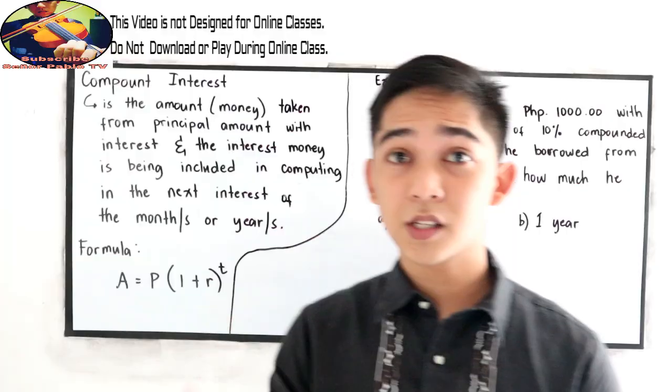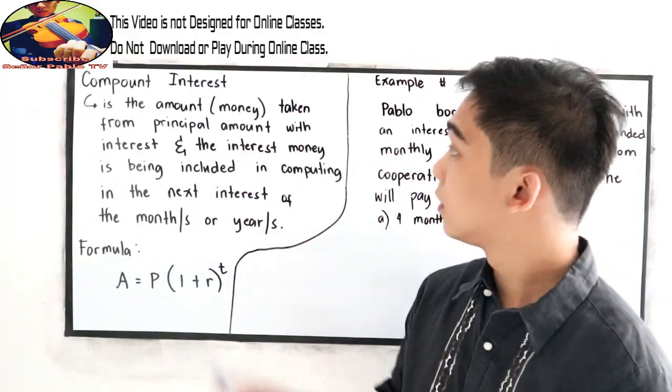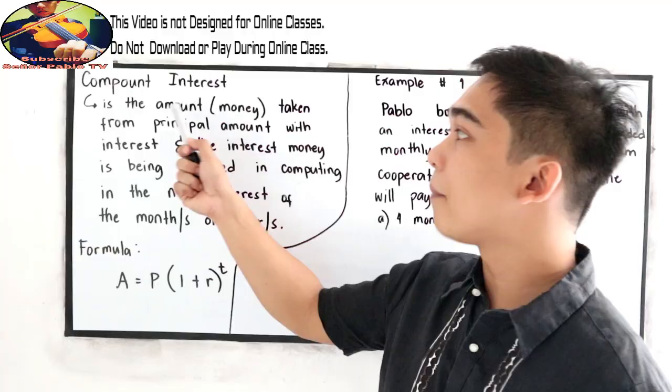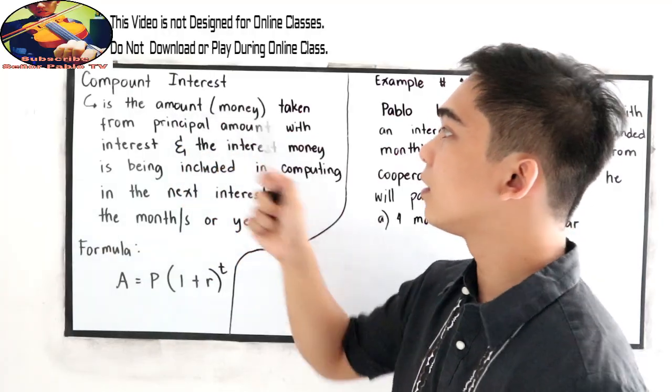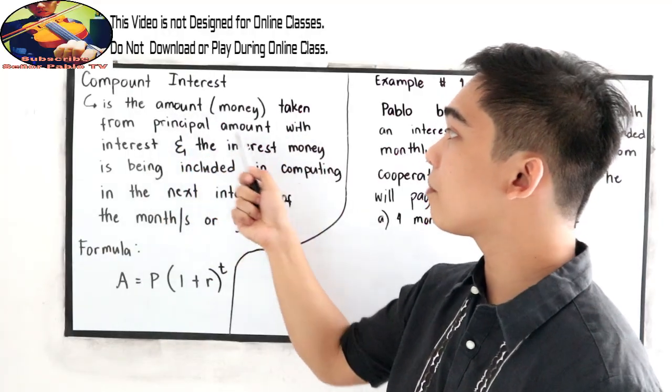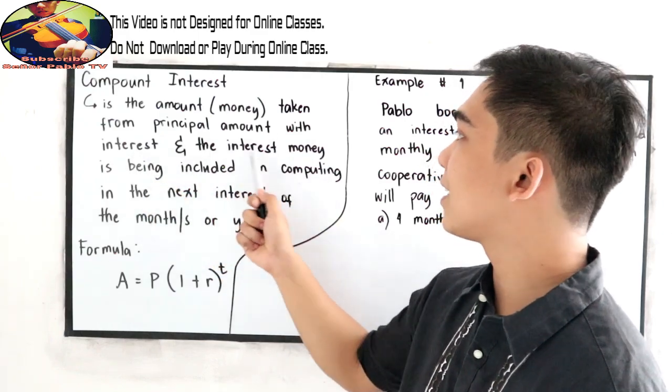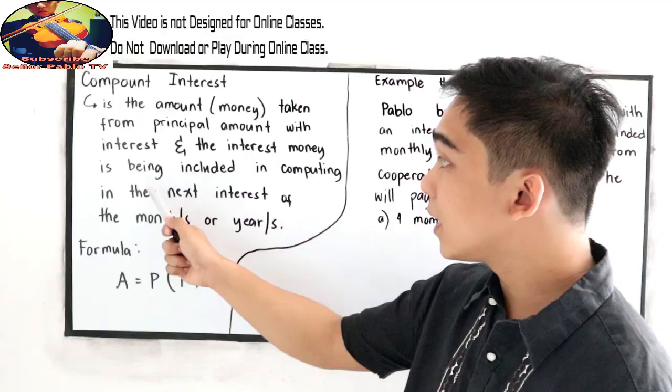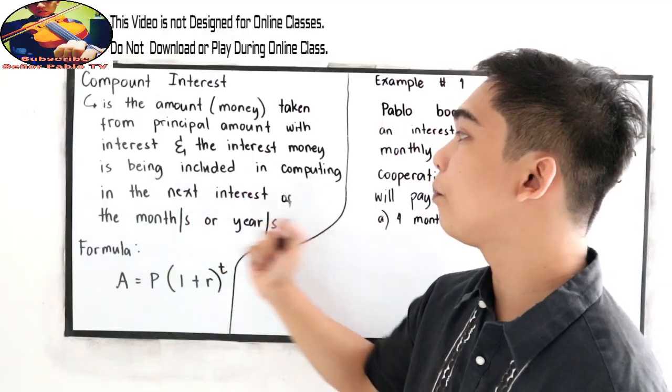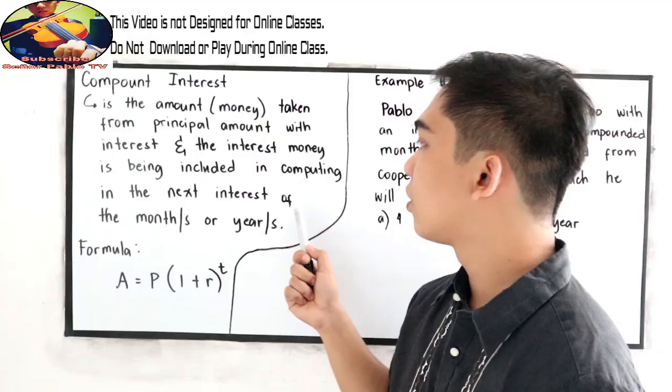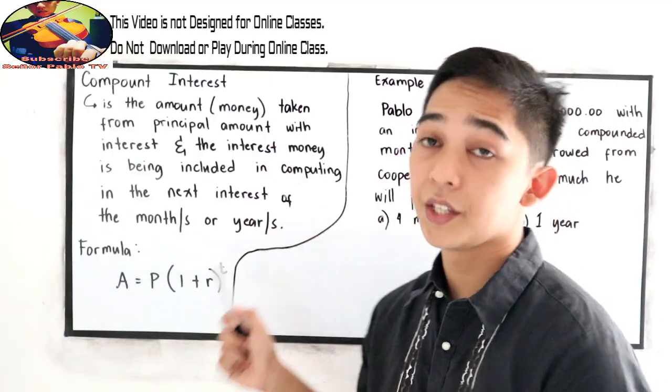Let's define what is compound interest. A compound interest is the amount or the money taken from principal amount with interest, and the interest money is being included in computing the next interest of the months or years.